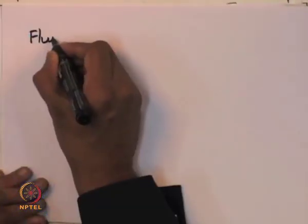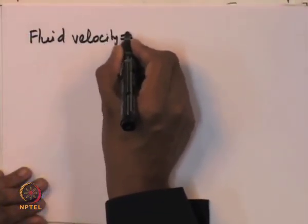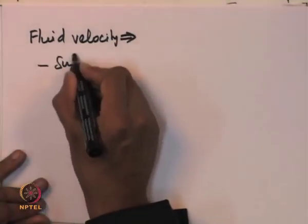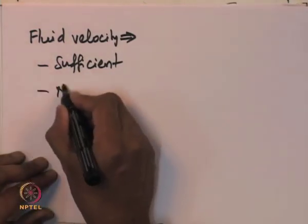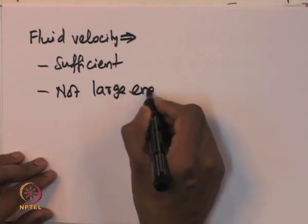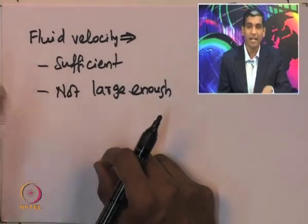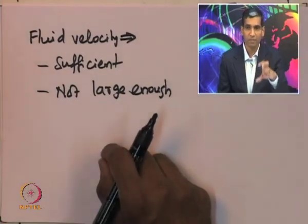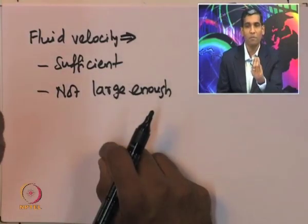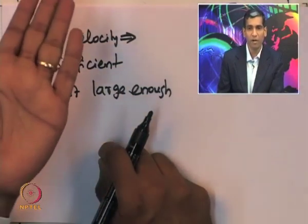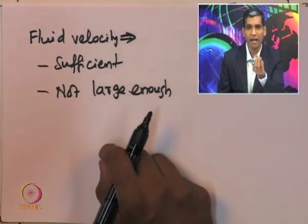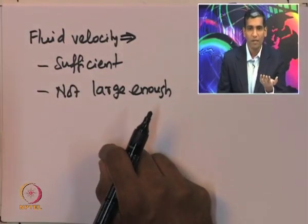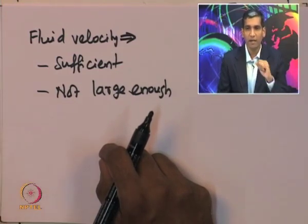For fluidization to occur, the fluid velocity must be just sufficient to suspend the particles in the fluid stream, but not large enough to carry the particles out of the reactor. Controlling the fluid velocity is therefore an important step in the fluidization process. There are different flow regimes that may be attained during fluidization.